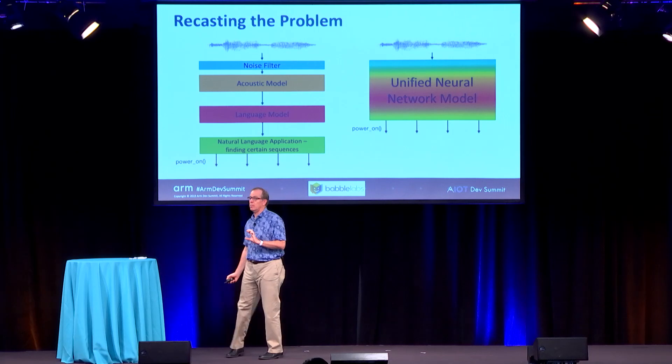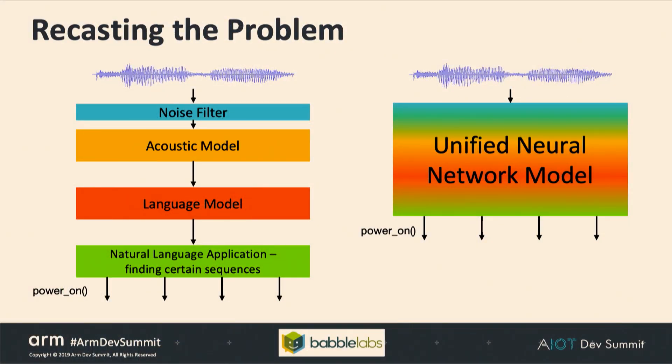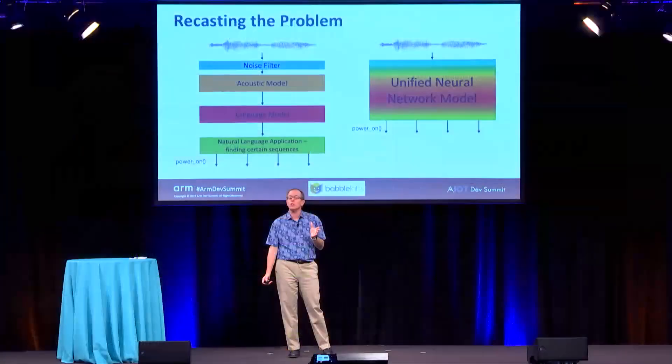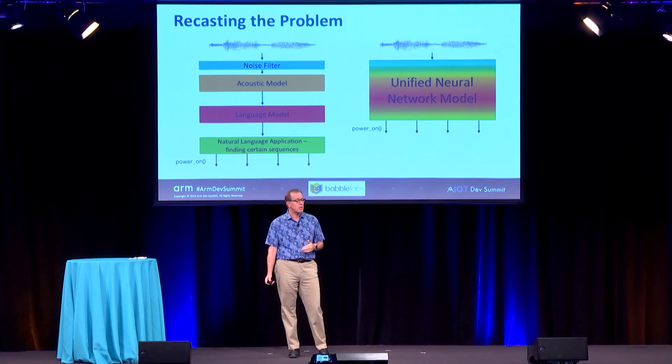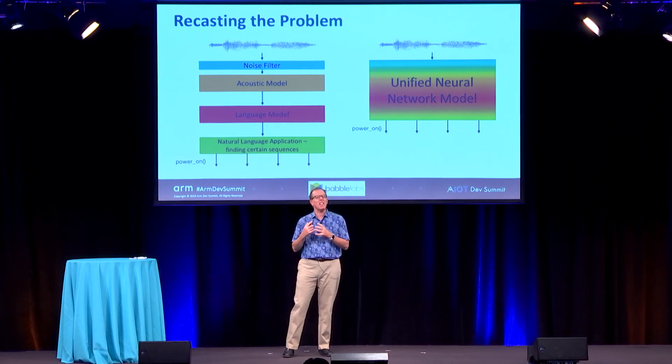So let's recast the problem. We're going to take all of those components — the noise filter, the acoustic model, the language model, the natural language application, which were previously separate modules — increasingly deep learning based — and build a unified neural network model that effectively does all of those things together. It takes in raw, noisy speech and puts out the recognized command signals for a finite vocabulary. When you do that, you have an opportunity to make something significantly smaller. And because it's trained for noise and built to focus on the phrases of interest, it can actually be significantly more robust than the much larger cloud-based models.